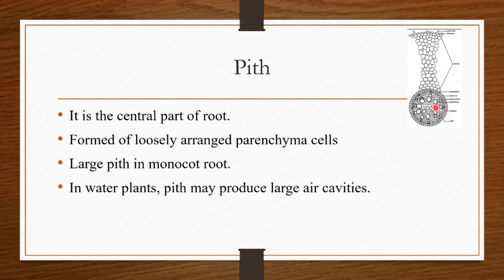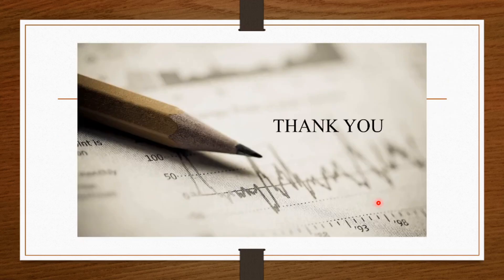The last region is the pith or central region. It is the central part of the root and is made up of loosely arranged parenchyma cells. Monocot root contains a large pith compared to dicot root. In water plants, this pith may produce larger air cavities for buoyancy. These are all the features of the monocot root. Thank you for listening.